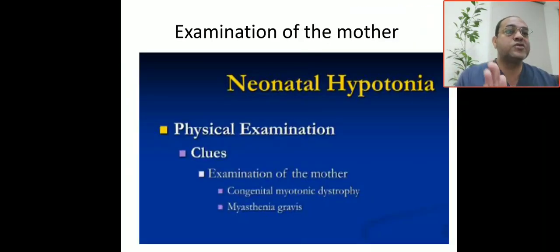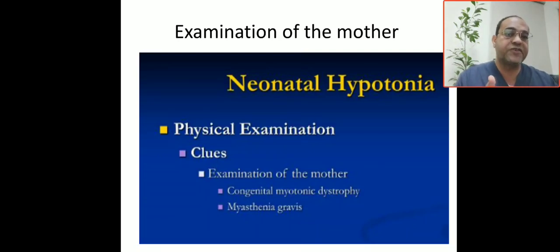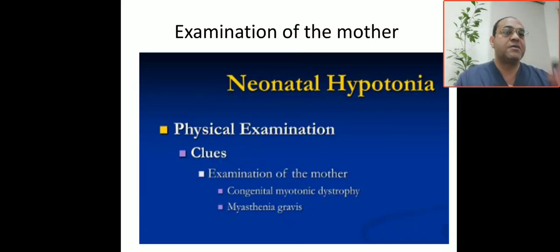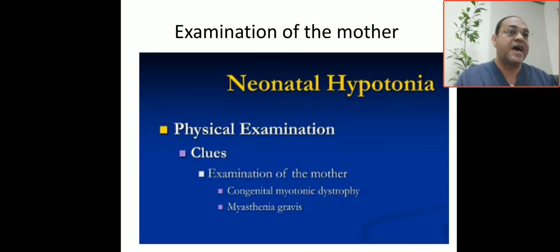When to examine the mother for hypotonia: examine her if congenital myotonia dystrophica or myasthenia gravis is suspected. How to differentiate between them: age of presentation. In myasthenia gravis, the baby presents immediately after birth — not 12 days later as in this case. In both conditions, the mother is affected.